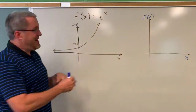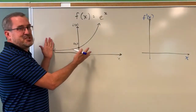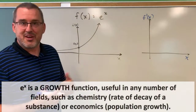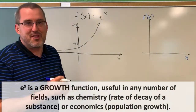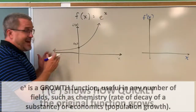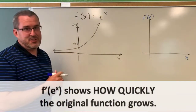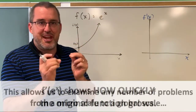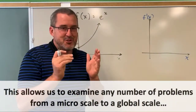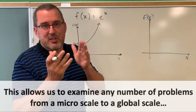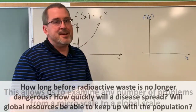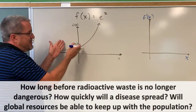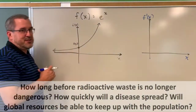Here on the board I have a roughed out sketch of the function e to the x. I hope this is a familiar exponential growth curve that you've seen before, but now let's focus on the derivative of this function. Keep in mind that the derivative measures for us the rate of change at an instant — sometimes we call it the slope of the curve at a point — and we're going to map little by little the slope of this curve to its derivative function.